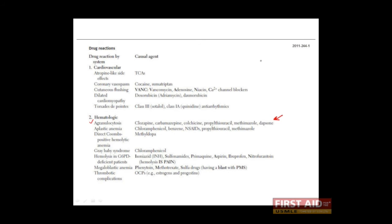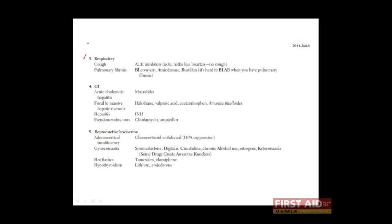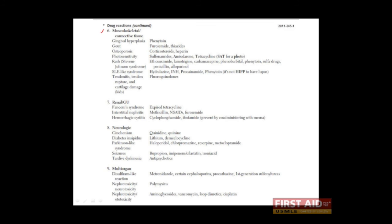Again, to nail those extra points, you'll have to memorize these, and we've tried to provide some good mnemonics toward that end. Just going through this quickly, you'll see that we have several drug reactions that affect the cardiovascular system, the hematologic system, the respiratory system, the GI system, reproductive and endocrine, musculoskeletal, renal and genitourinary, neurologic system, and then here we've listed drugs that cause adverse reactions in more than one system.